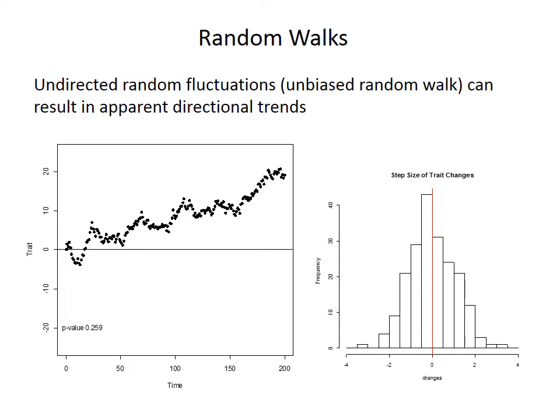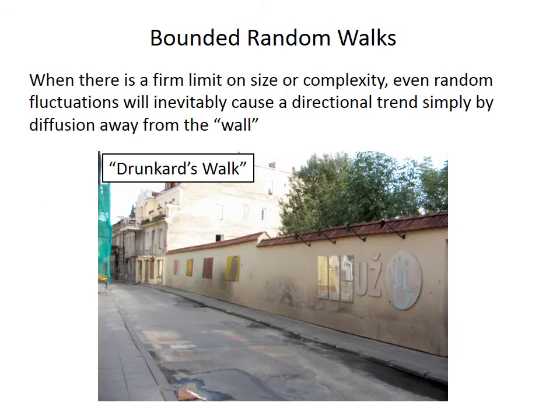Another way to think about random walks is using an analogy with coin flipping. Normally you would expect to get around half heads and half tails. But if you flip enough coins and do it enough times, you'll get a run of 5 heads or 10 heads or maybe even more in a row. Although those unbiased random walks can produce short-term trends, they should revert to the average over the long term.